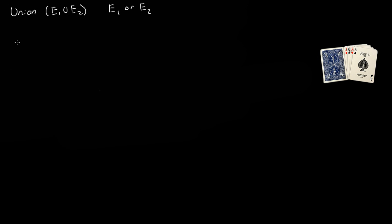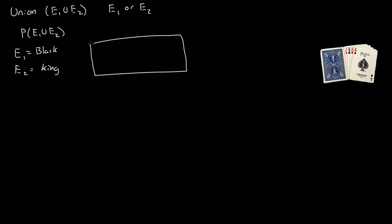So let's find the probability of the union of event one and event two. Let's say event one is equal to getting a black card, and event two is equal to getting a king. If we draw our Venn diagram, this area represents red — so all the red cards — and this area represents all the kings.